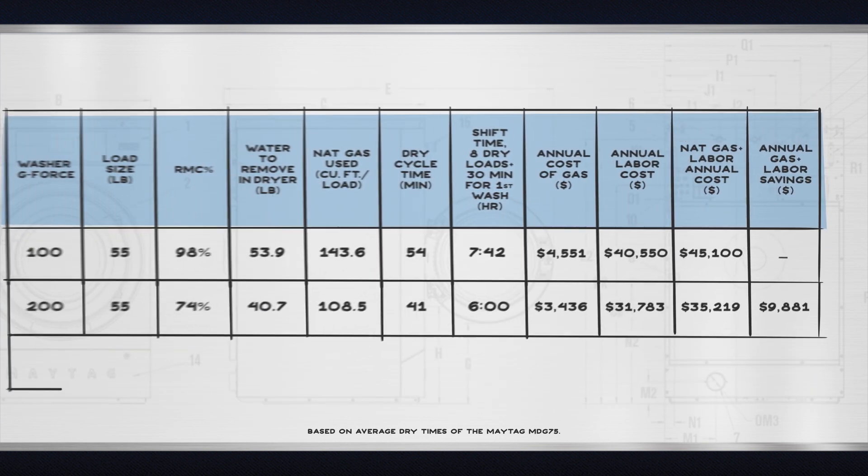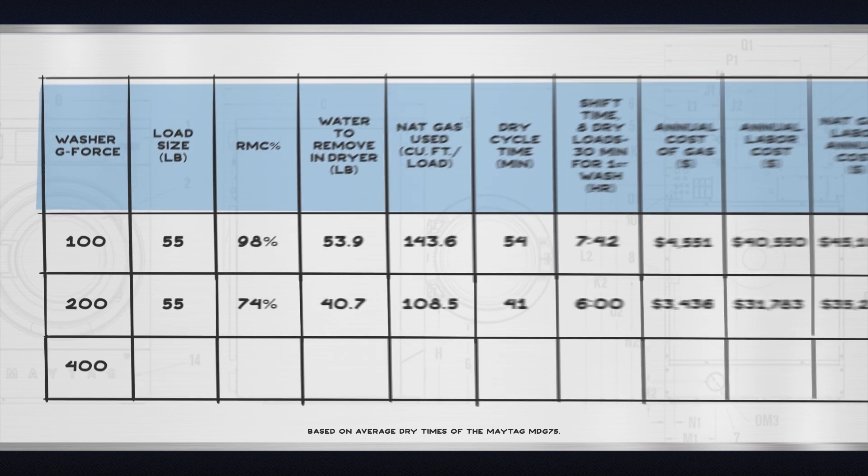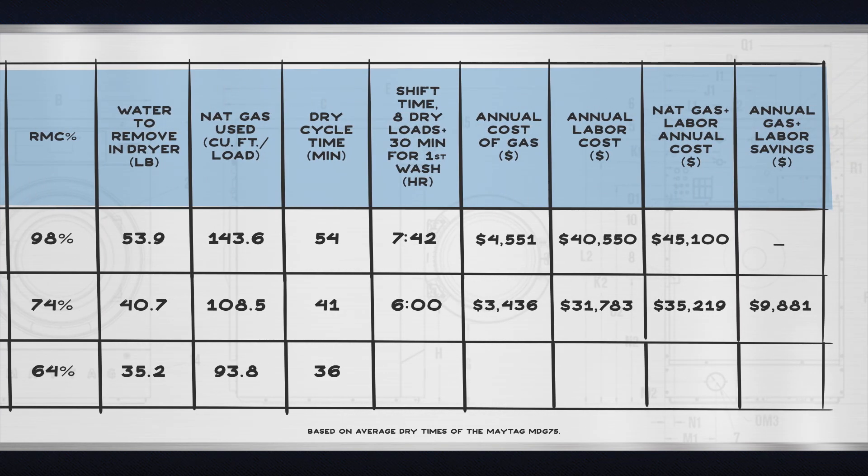Last, let's look at 400 g's of force. Using the same load, the washer will only retain about 35 pounds of water, almost 20 pounds less than the 100 g washer. Natural gas consumption has now been reduced to roughly 94 cubic feet per load, and the dry cycle time is reduced to just 36 minutes. That means the total shift time for this scenario is now five hours and 18 minutes, almost two hours less than the 100 g washer. Crunching the numbers, you save nearly fourteen thousand dollars in labor and gas costs over the course of the year when you use the 400 g washer versus the 100 g washer.